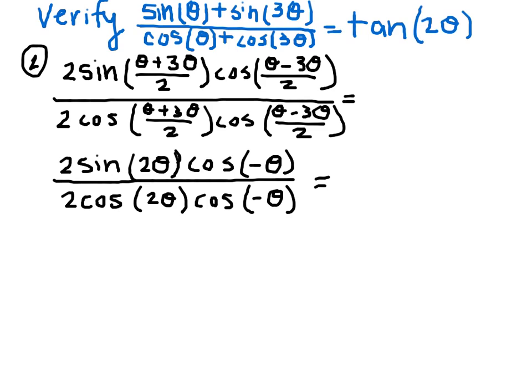And since these are all multiplied together in the numerator and the denominator, we can cancel. So we have this in the numerator and the denominator, cosine of negative theta. And we also have this 2 out front, so we can get rid of that.